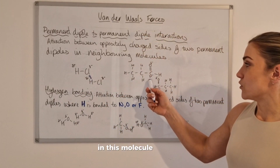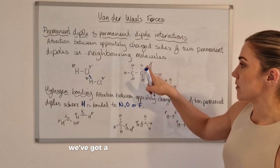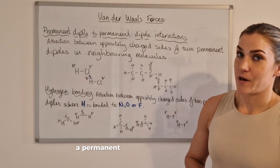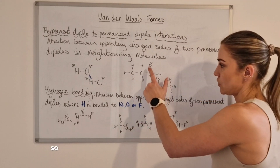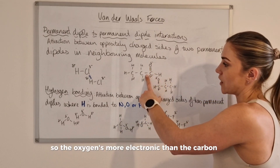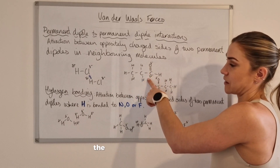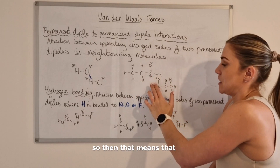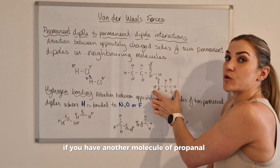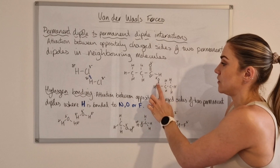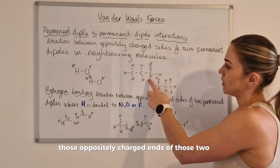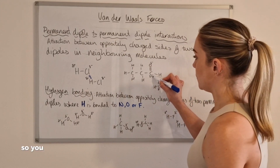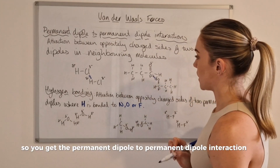In this molecule here we've got a carbonyl functional group, which is renowned for creating a permanent dipole. The oxygen is more electronegative than the carbon, which means oxygen ends up as delta minus and the carbon is delta plus. So if you have another molecule of propanal — which is what this is — those oppositely charged ends of the two neighbouring permanent dipoles will attract each other, giving you the permanent dipole attraction.